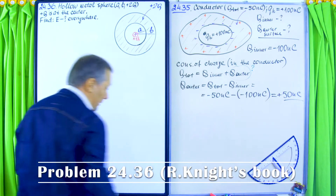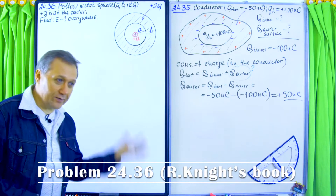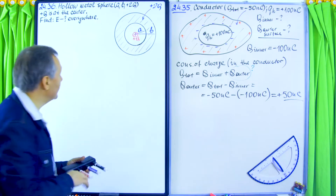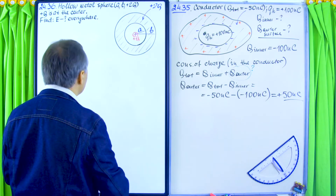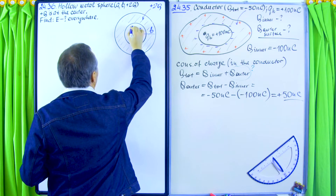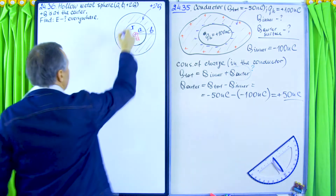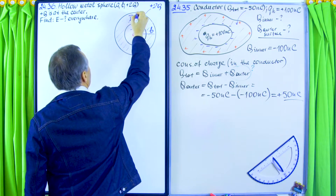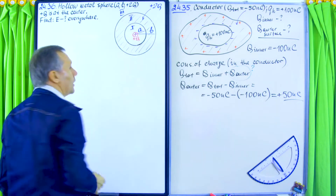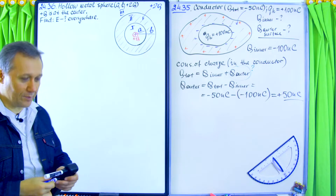Find electric field everywhere. We'll have to find the electric field in three regions. First, let's label them. I'll use blue. Region one is inside of the hole. Then inside of the conductor is region two, and region three will be outside of the whole structure. So let's start with region number one.